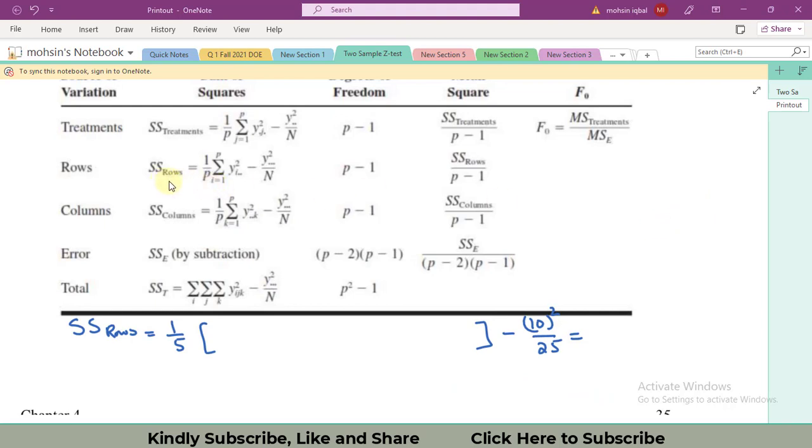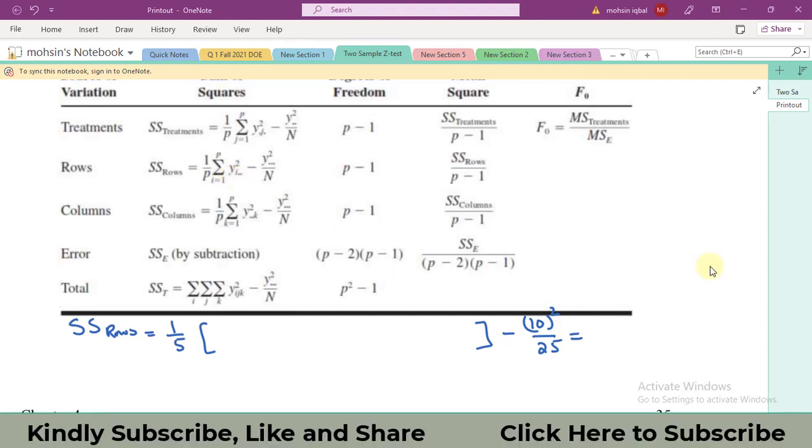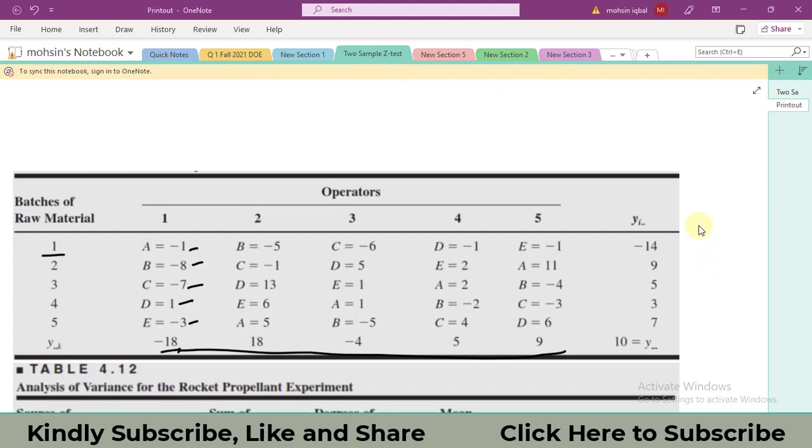For sum of squares of treatment rows, I have yi. Here I have yi dot dot. So i represents the rows. I have five different rows. Let's go towards the data. The sum of the five rows are minus 14, 9, 5, 5, 3, 7. Take the square of all these terms and then their addition.